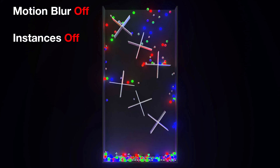From there, I decided to investigate a little bit further and I turned instances back on. So now these objects are instances of the original — there are only six modelled balls in this scene, everything else is an instance. And it still worked; it's still identical to the version with both motion blur and instances off.